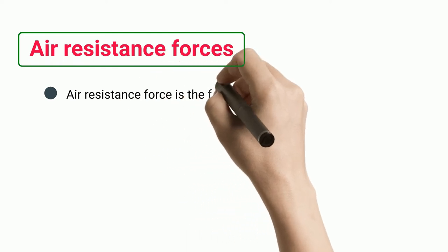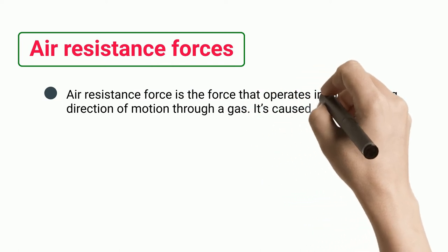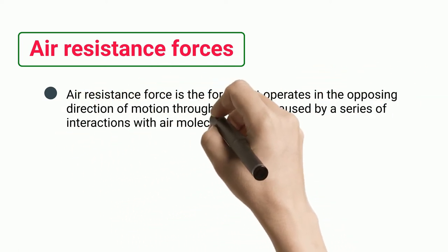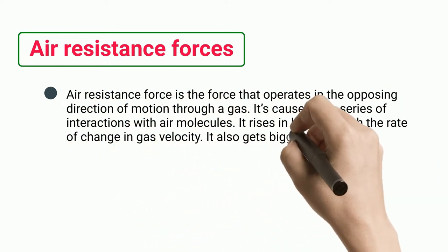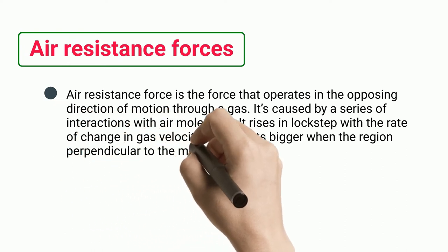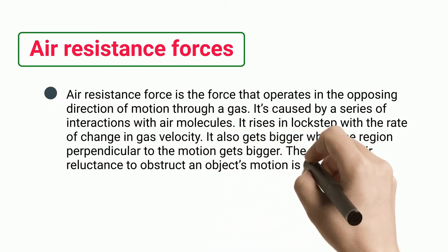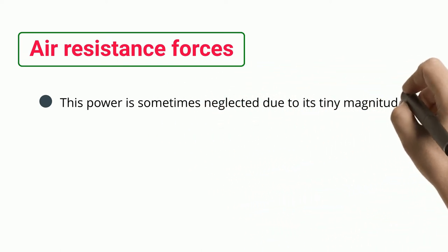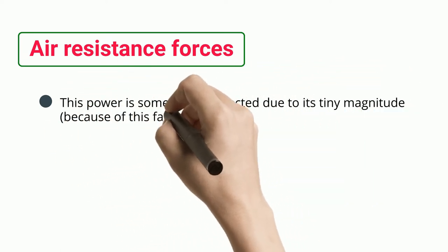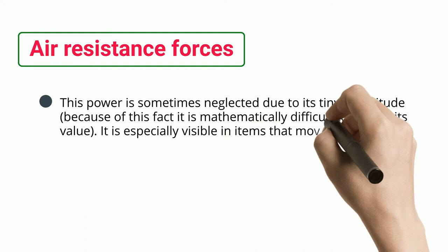Air resistance force is the force that operates in the opposing direction of motion through a gas. It is caused by a series of interactions with air molecules. It rises in lockstep with the rate of change in gas velocity. It also gets bigger when the region perpendicular to the motion gets bigger. The ability of air reluctance to obstruct an object's motion is widely observed. This power is sometimes neglected due to its tiny magnitude, because of this fact it is mathematically difficult to predict its value. It is especially visible in items that move at great velocities.